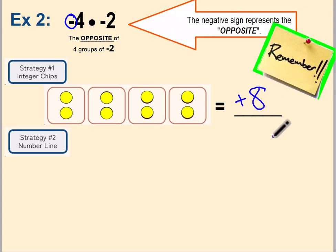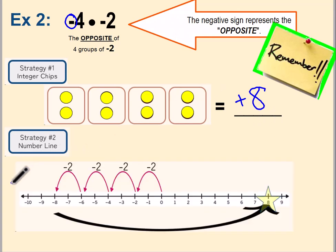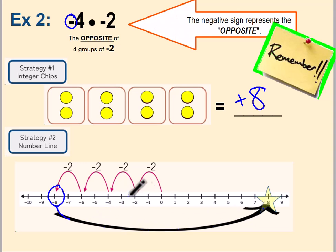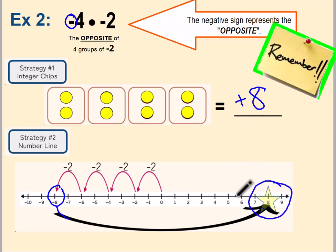On the number line, we still model it the same way as example one — we show four groups, each group covering negative two. But because it's the opposite, instead of our answer being negative eight, we do the opposite: the same distance from zero but on the other side. So instead of eight on the negative side, it turns into eight on the positive side — positive eight.